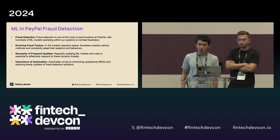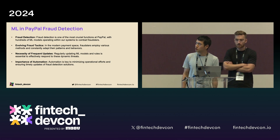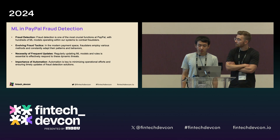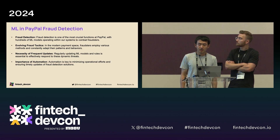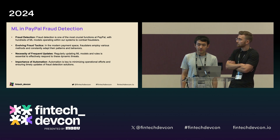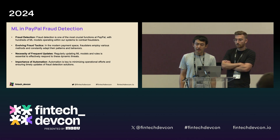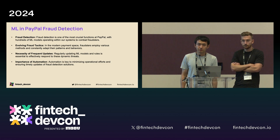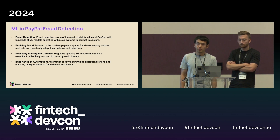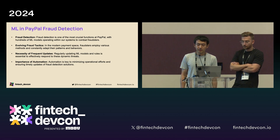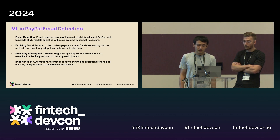Let me give a quick introduction about machine learning in PayPal fraud detection. Fraud detection is one of the most crucial functions at PayPal. We deploy hundreds of models leveraging tens of thousands of features in our system. These models and features are used by many rules to make final decisions. This machine learning solution operates across multiple checkpoints, covering different business portfolios to mitigate various fraud behaviors such as account takeover, stolen financial, collusion, and so on.